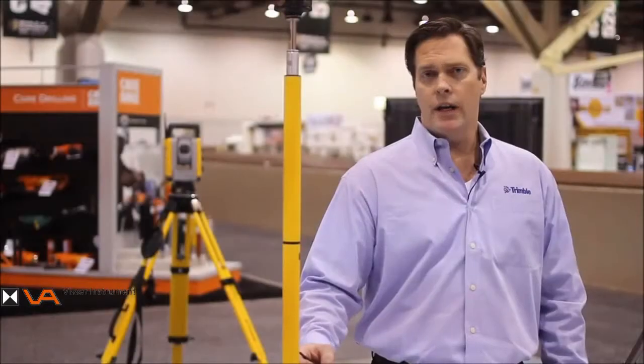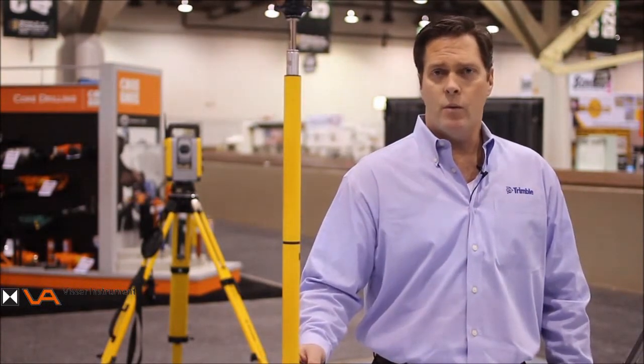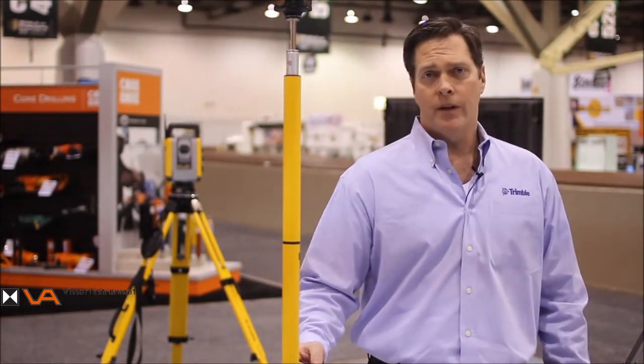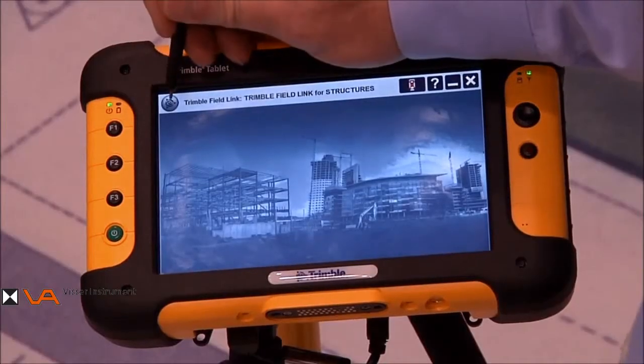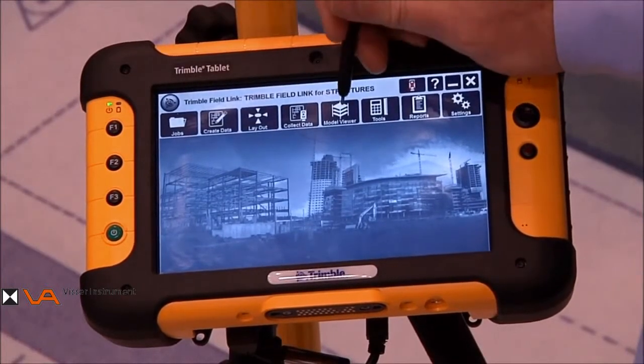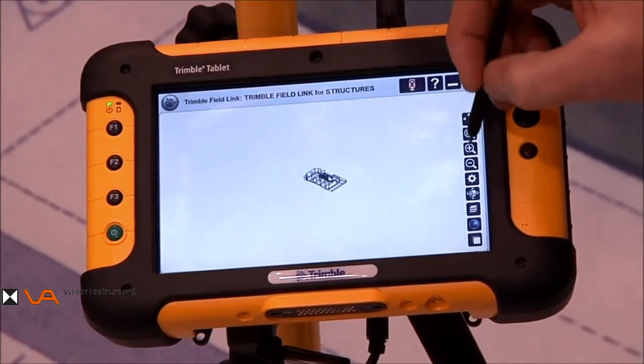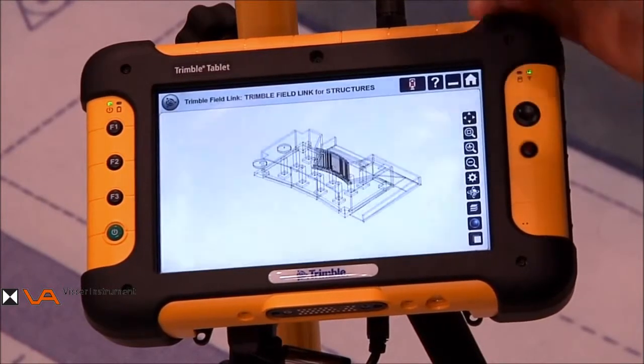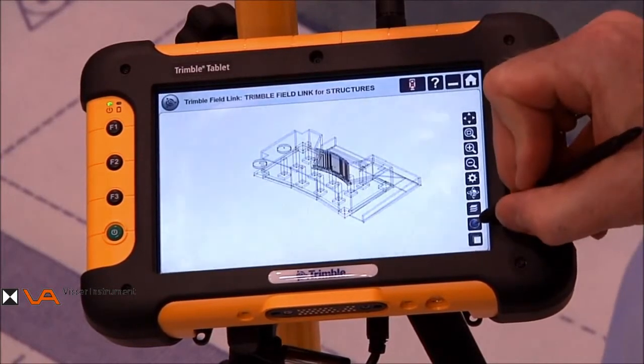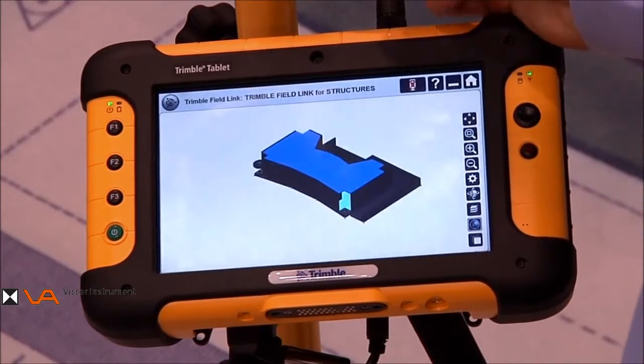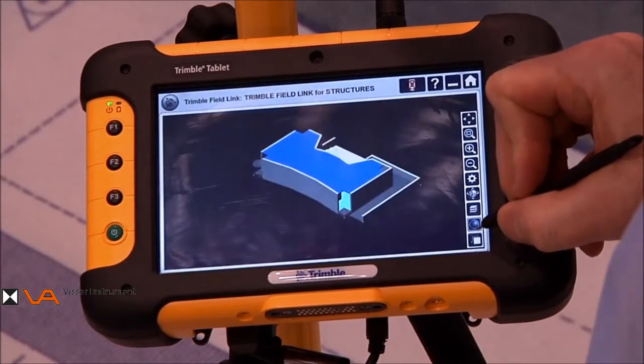The next key feature in the Trimble Field Link for Structures product is the model viewer. In the past, we always operated with a two-dimensional CAD drawing. Today, we have the ability to view and navigate a 3D model. The way we do that is go to the Trimble globe to access the ribbon. We're going to select model viewer. Now we can zoom in and take a look at the model in a three-dimensional realm. We can go from a wireframe to a shaded mode. We can also change background colors to better view the 3D model.